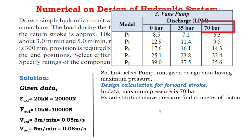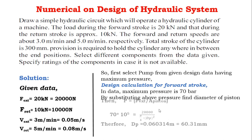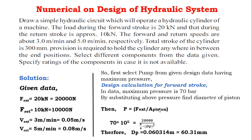Design calculation for the forward stroke: considering the maximum pressure of 70 bar, we substitute this pressure to find the diameter of the piston. By calculating this, we get the diameter of piston equal to 60.31 mm.